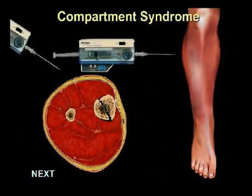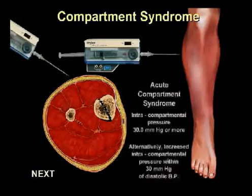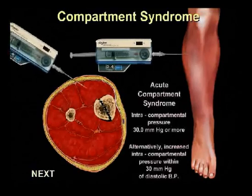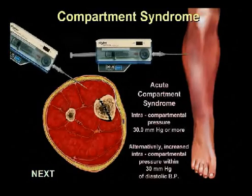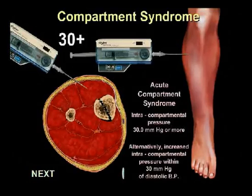An absolute pressure of 30 mmHg or higher, or within 30 mmHg of the diastolic blood pressure, is considered diagnostic of acute compartment syndrome.